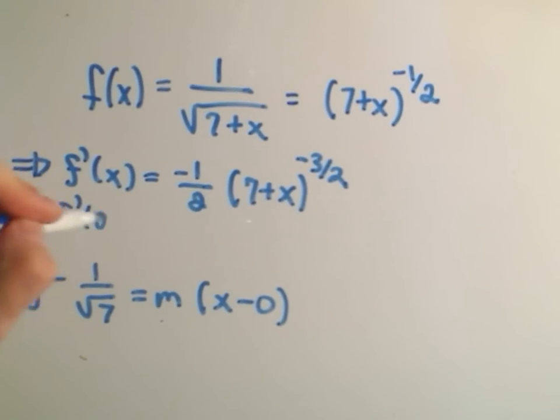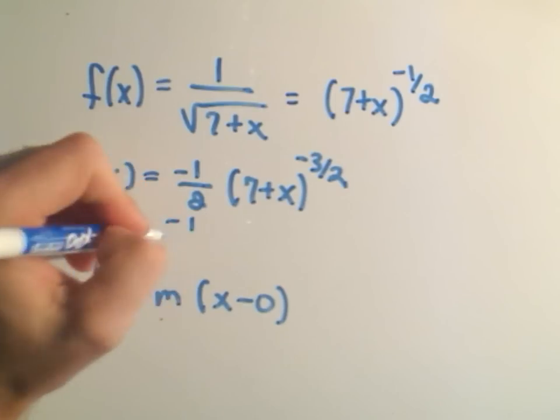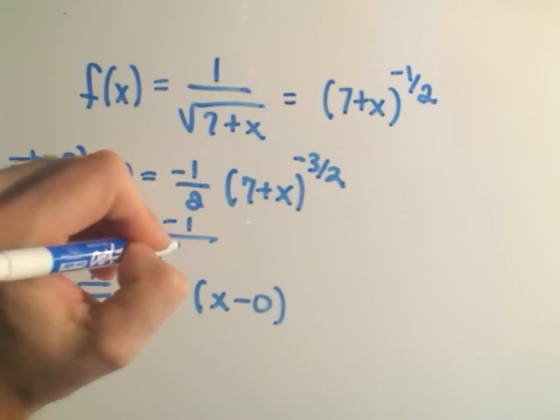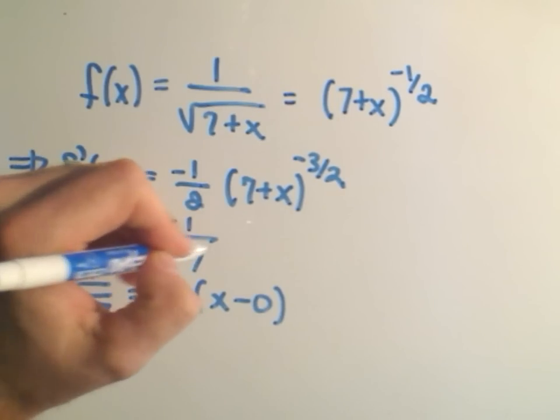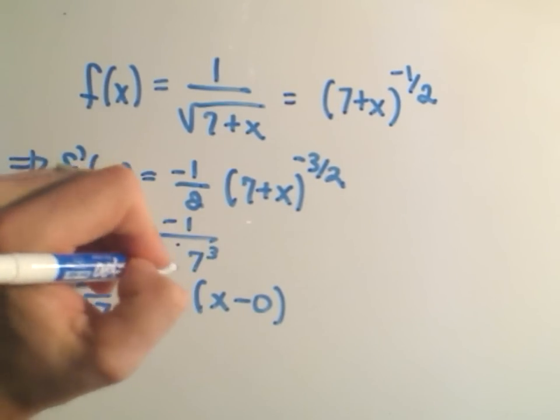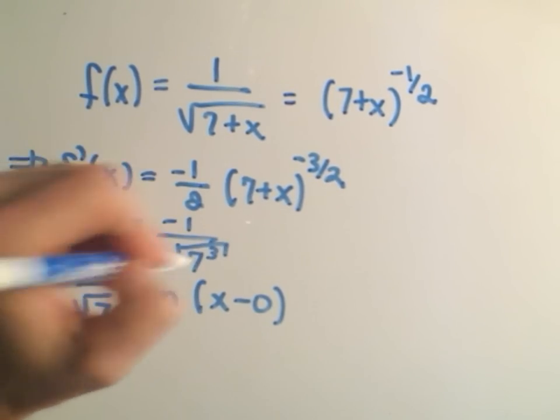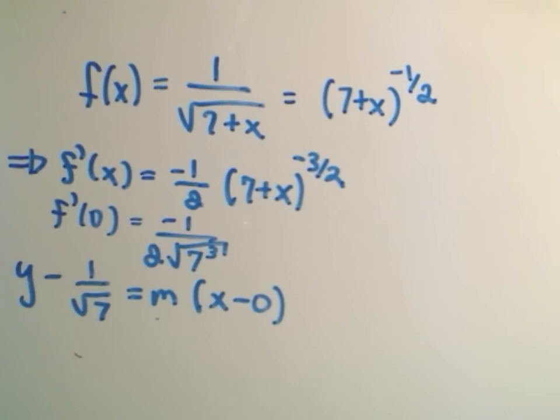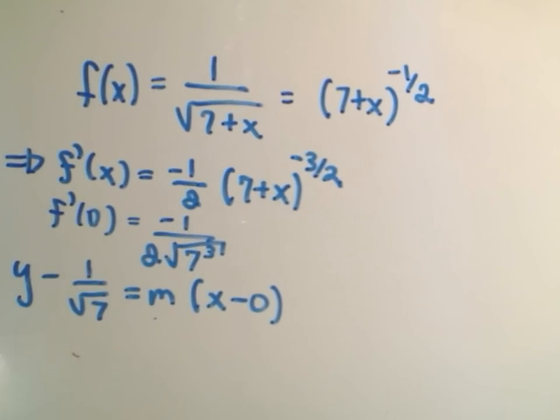So the derivative at 0 says we'll get negative 1 over 2. If you plug 0 in, we'll get, that'll be 7, the cube root of 7, the square root of 7 cubed is what I meant to say. And that's the slope that we're going to have to plug in there now.